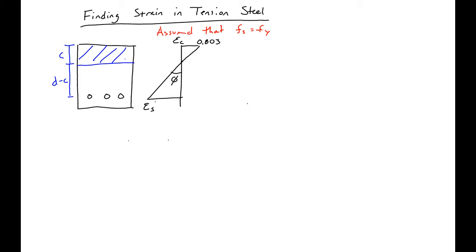Using similar triangles, we can find that our ECU over C is equal to our strain in the steel over d minus C. So then solving for our ES, we can find that our ES is equal to our ECU, which is 0.003 over C times d minus C.